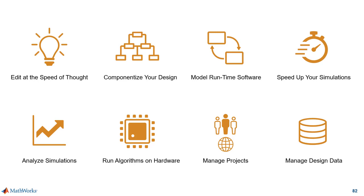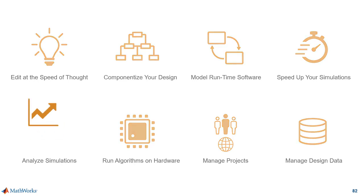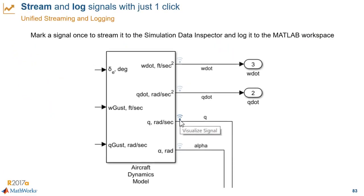Let's see what's new in Simulink for simulation analysis. Logging signal values for analysis is much easier now, because you can stream and log a signal with just one click. These used to be different actions before, but now they're unified. When you log a signal, that data is logged to the MATLAB workspace and the Simulation Data Inspector. That's nice because you have the flexibility to access your simulation data either in MATLAB or Simulink.